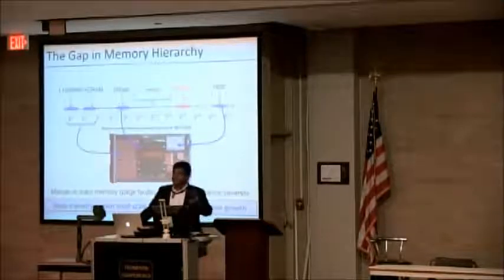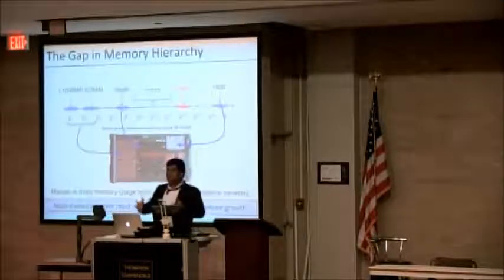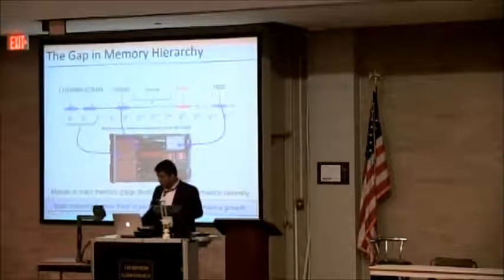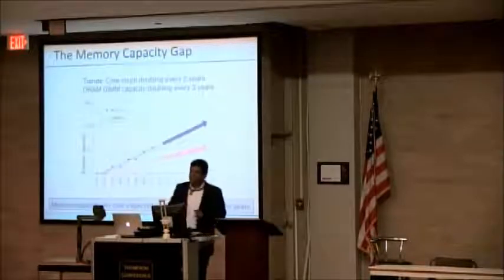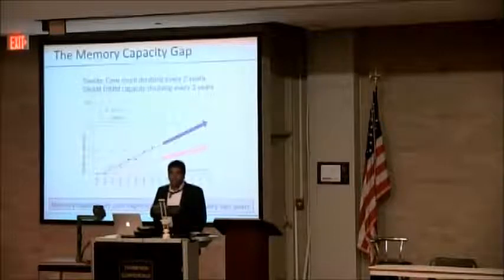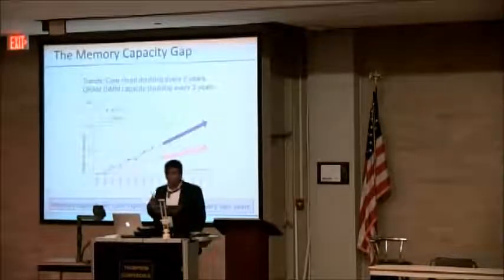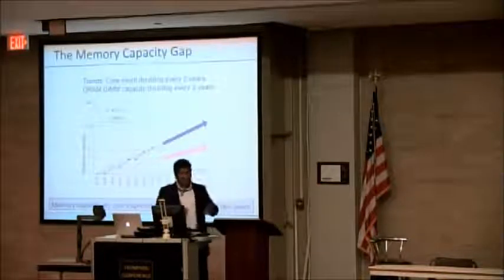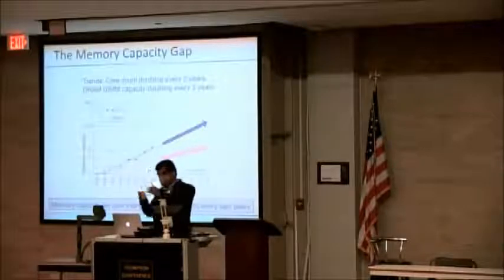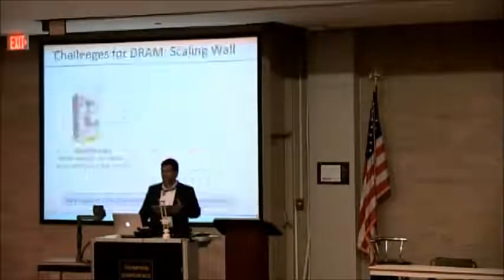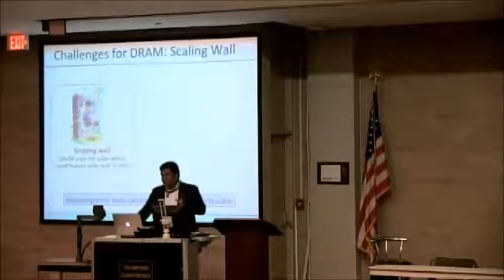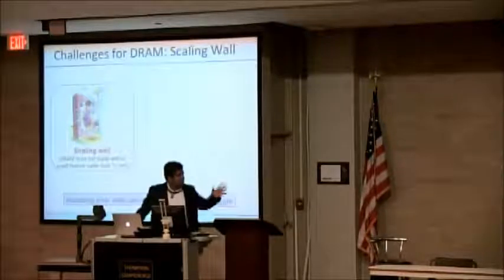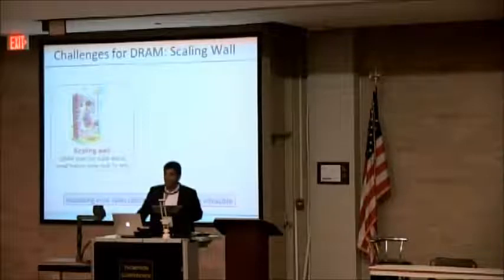As systems scale, as we increase the processor count and try to do more and more work, the application working set increases. To get performance, it's important that memory system capacity must scale as well. Technology scaling is hard — it's always hard, but it's even harder for memory. For logic, roughly the trend has been you get twice as many transistors or twice as many cores every two years, but DRAM DIMM capacity doubles roughly every three years. If we just continue on these curves, the memory capacity per core actually goes down 30% every two years. And whether DRAM will scale at all is questionable — it's very hard to scale DRAM below 20 nanometers.